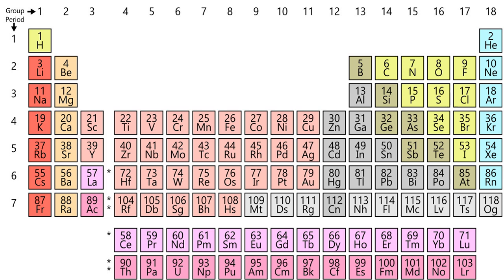It is often stated that the last naturally occurring element to be discovered was francium in 1939. Plutonium, produced synthetically in 1940, was identified in trace quantities as a naturally occurring element in 1971. The popular periodic table layout, also known as the common or standard form, is attributable to Horace Groves Deming. In 1923, Deming, an American chemist, published short-form periodic tables. Merck and Company prepared a handout form of Deming's 18-column medium table in 1928, which was widely circulated in American schools, and by the 1930s Deming's table was appearing in handbooks and encyclopedias of chemistry.